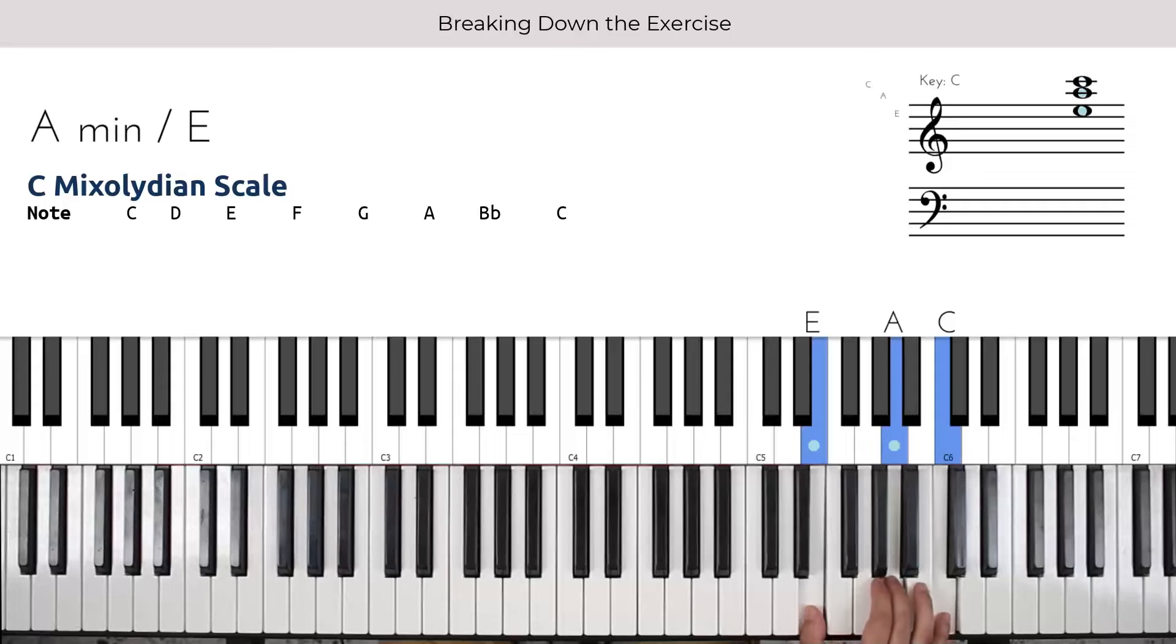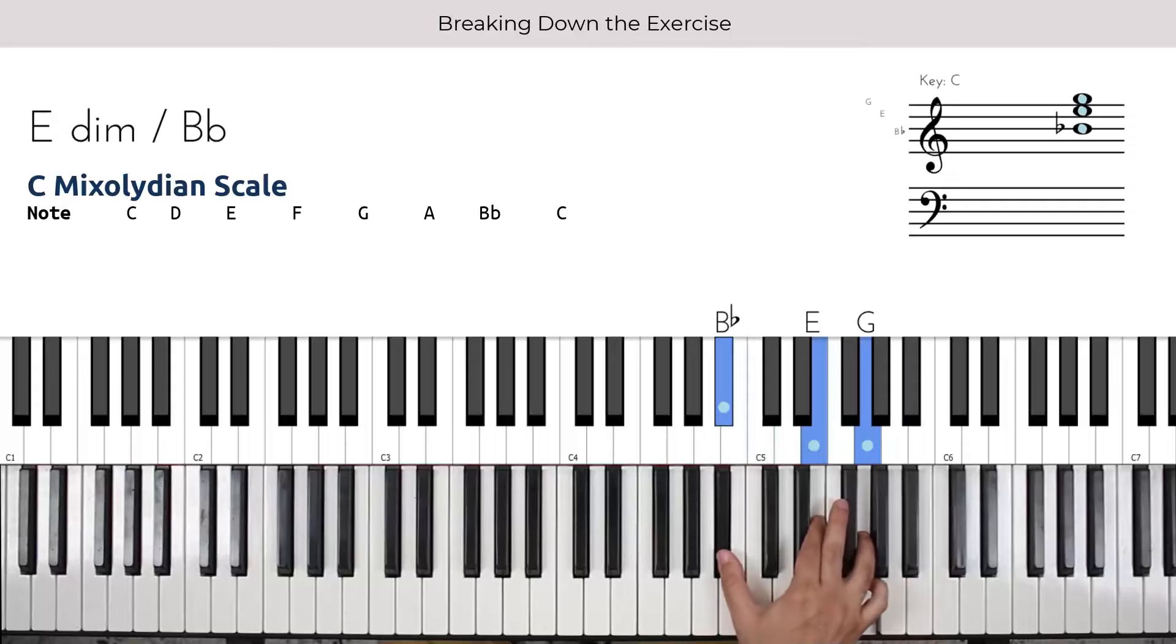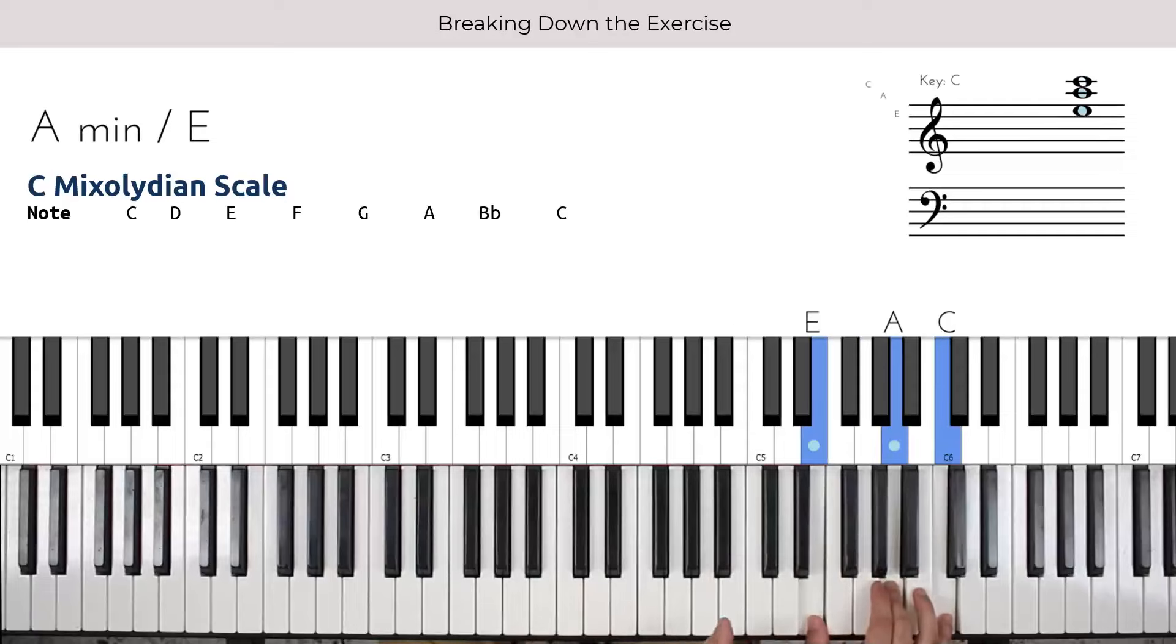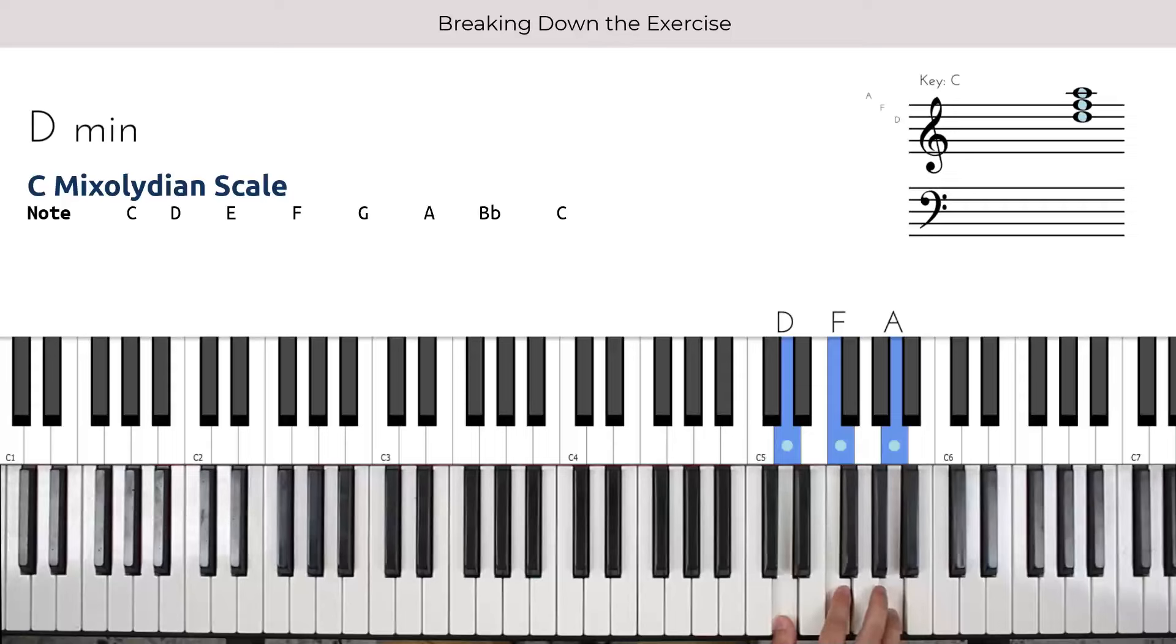So starting with this shape, we move it down on this scale. So each note moves down one note in the C mixolydian scale. The C here moves down to a B-flat, the A to a G, and the E to a D. And next, the B-flat moves down to an A, the G to an F, and the D to a C, and so on.